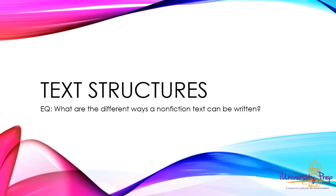Welcome to this teachlet on text structures. The essential question: what are the different ways a nonfiction text can be written? Typically speaking, fiction texts are only written in one type of format, and that is in some type of sequential order. A novel is going to be written in a time order. However, with nonfiction, there are several different ways that an author can write it. So let's look at the variety of ways that an author can write a nonfiction text.